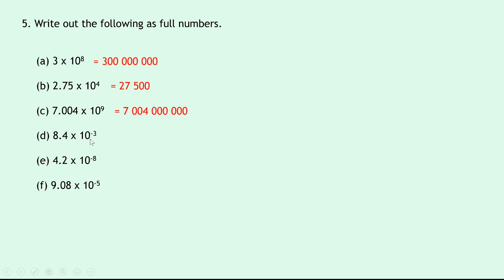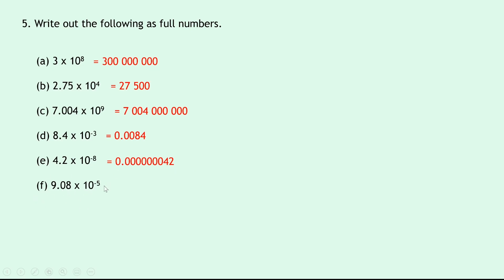For part d, 8.4 times 10 to the minus 3 — because it's a negative power we move the decimal point to the left by 3 places, giving 0.0084. Part e, 4.2 times 10 to the minus 8 — again moving the decimal point to the left because of the negative power, giving 0.000000042. And lastly, part f, 9.08 times 10 to the power of minus 5 — moving the decimal point to the left by 5 places gives 0.0000908.